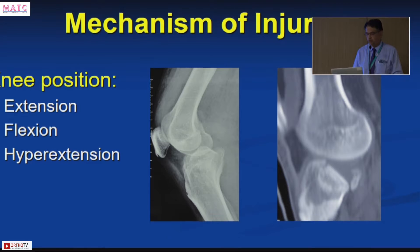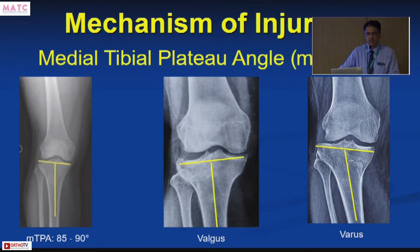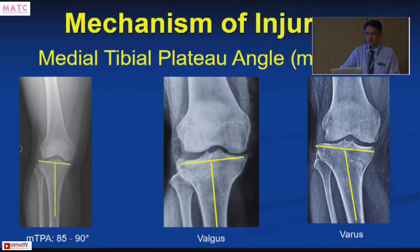To know whether there has been a predominantly varus or valgus force, you can measure the medial tibial plateau angle. The normal is about 87 degrees, with a range of 85 to 90. If the medial plateau angle is increased beyond 90, a valgus force has been applied and your main fixation must be on the lateral side. If it is reduced below normal, a varus force is indicated and main fixation must come on the medial side.